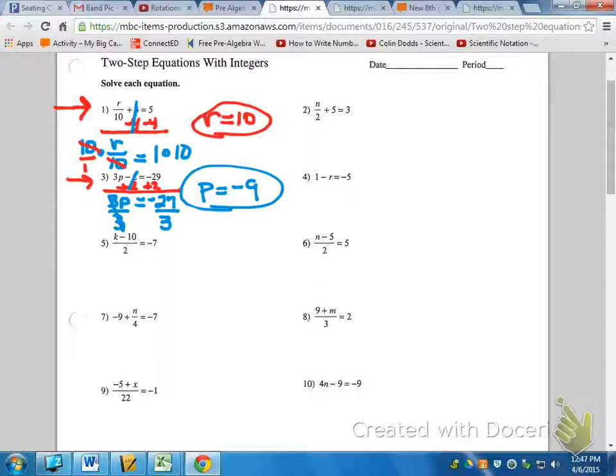Number 5, however, is something completely different. Notice how on number 5, when you go ahead and write it down, it's got the variable with an operation over a complete division bar over a number.